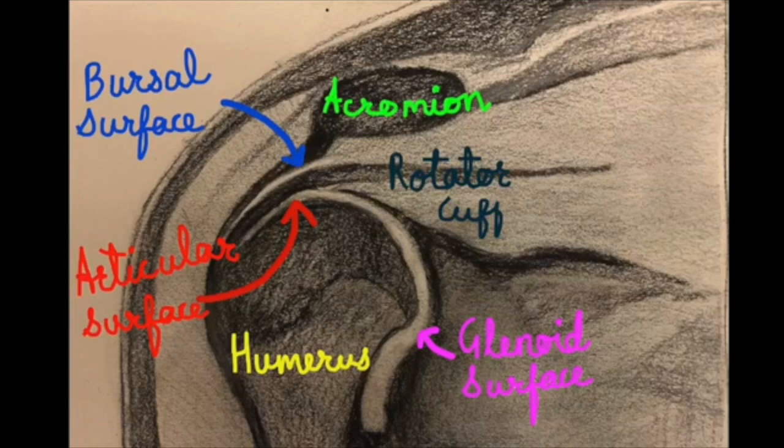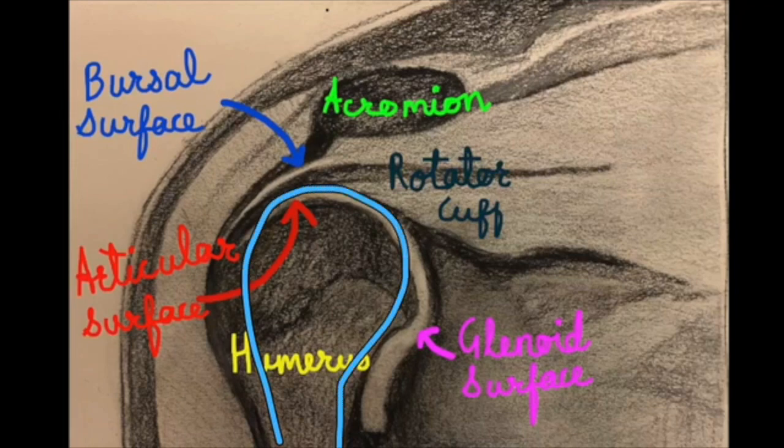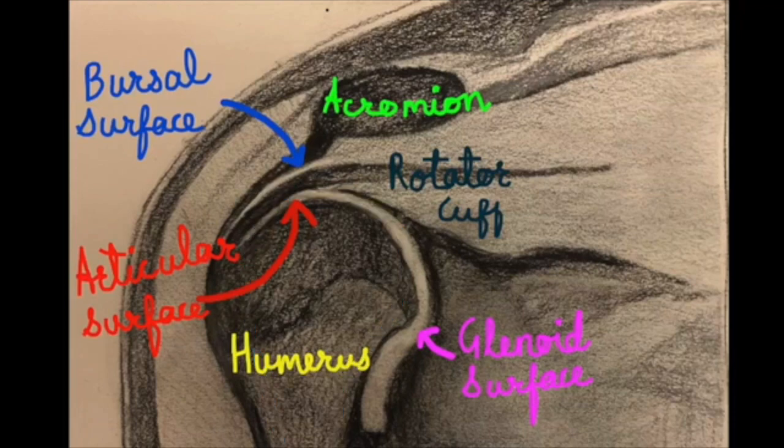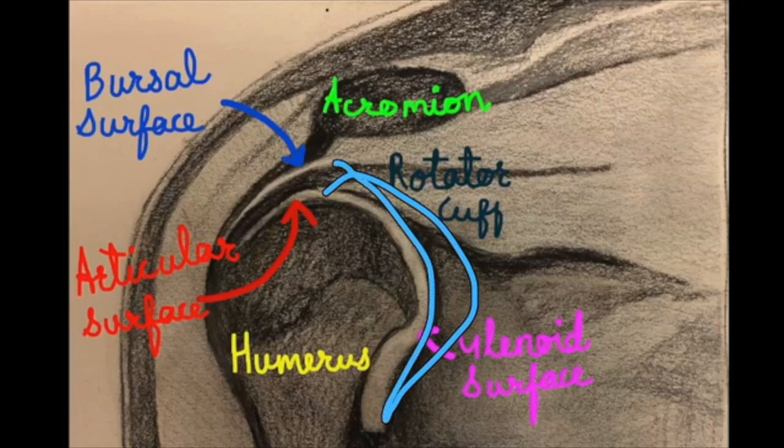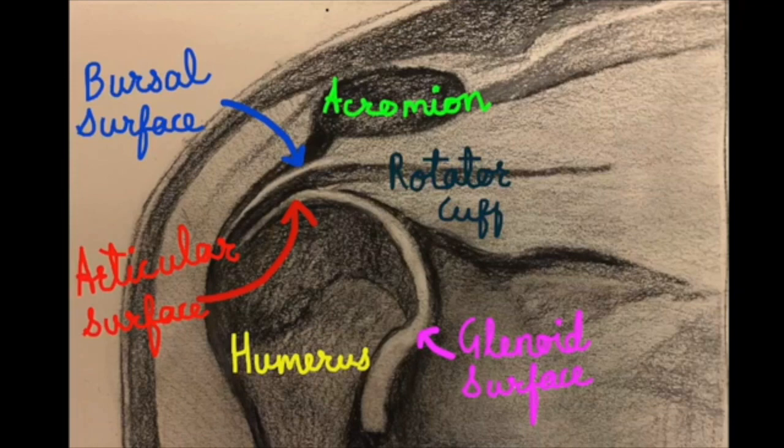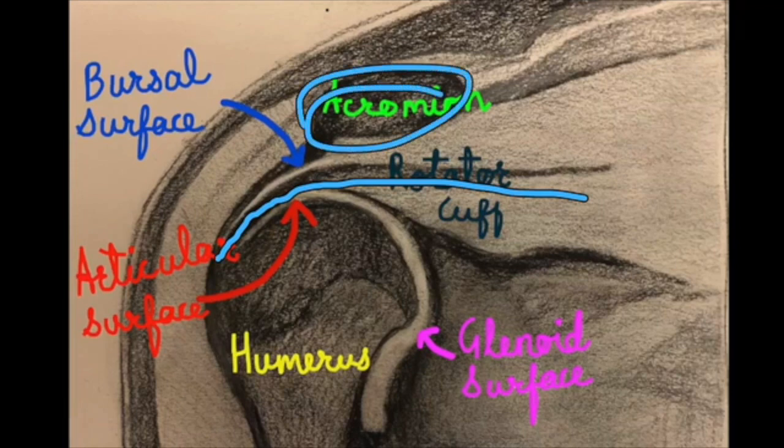Right in front of us here is basically the humerus, which is the arm bone. At the end of the arm bone is like a ball which fits nicely into the socket, which is the glenoid cavity right here. We have the rotator cuff muscles that are running right in between the acromion process right here and the head of the humerus.